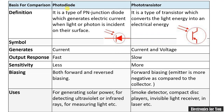Now let's see some differences between photo diode and photo transistor. This is the symbol for a photo diode, and this is the symbol for a photo transistor. A photo diode generates current, whereas a photo transistor generates both current and voltage. The output response of a photo diode is faster compared to a photo transistor.